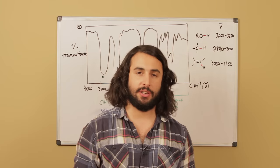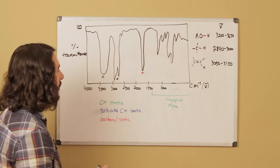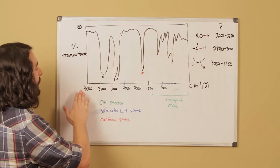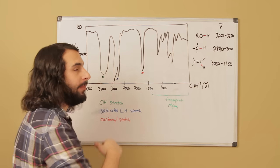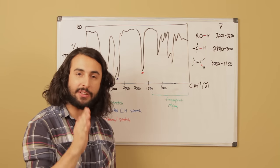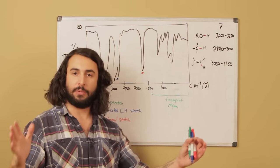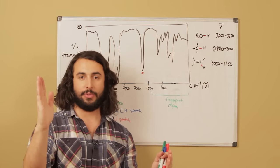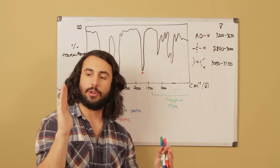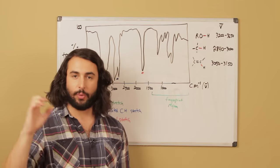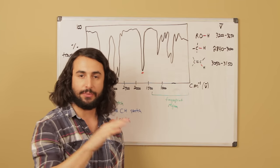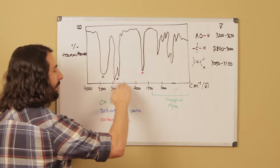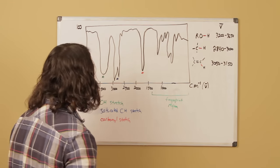I've drawn a sample IR spectrum here, so let's look at what these look like and try to understand what we can use them for. On the bottom axis we have the wave number, which tells us about the particular energy of infrared light. Infrared light covers a certain band of the electromagnetic spectrum from one wavelength to another, with many energies in between. We irradiate our sample with all of that infrared light at all those different wavelengths, and the wave numbers differentiate between those individual energies of IR radiation.